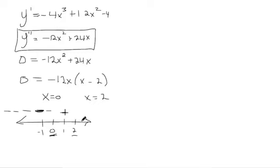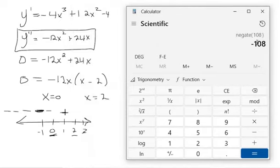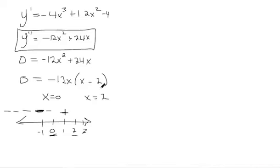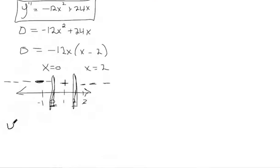We also check something to the right of 2, so let's plug in x equals 3: 9 times 12 makes negative 108, and 24 times 3 is 72, so the result is negative 36 — negative over here. So everywhere to the right of x equals 2 is concave down. To answer the question, where is it concave up? It's where the second derivative is positive — only between 0 and 2, between those two inflection points.